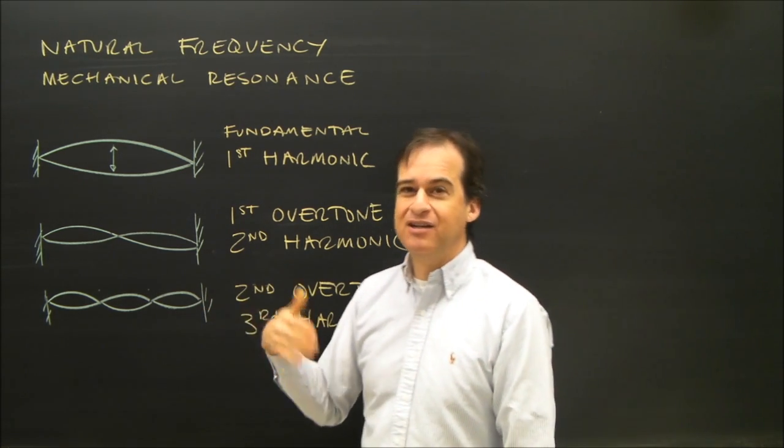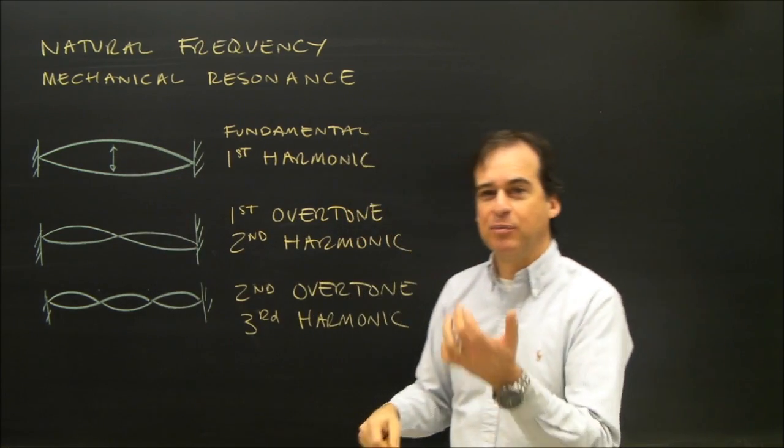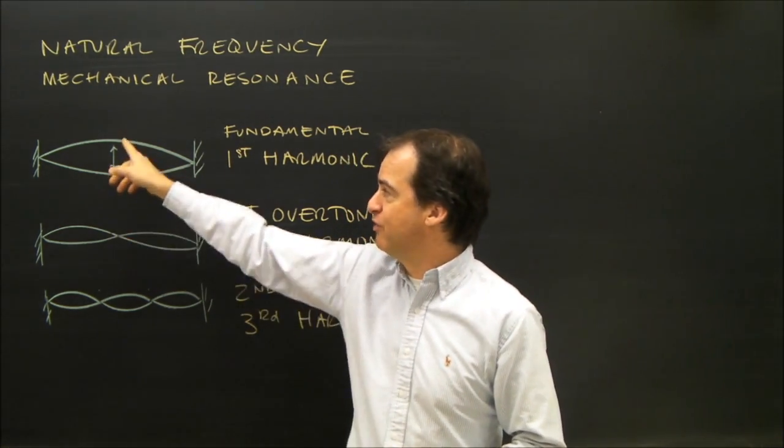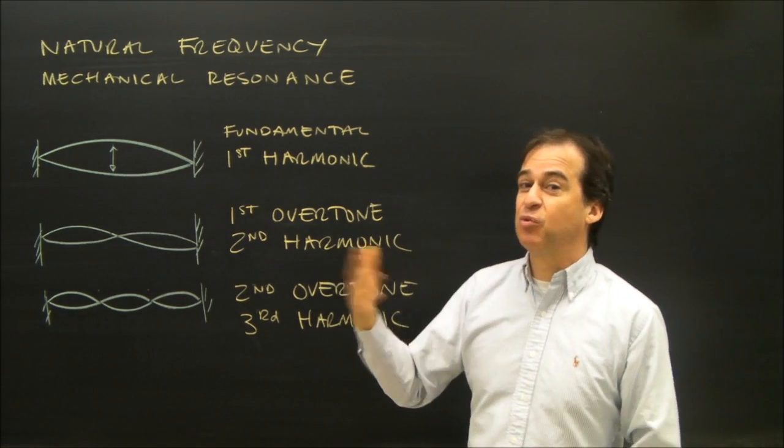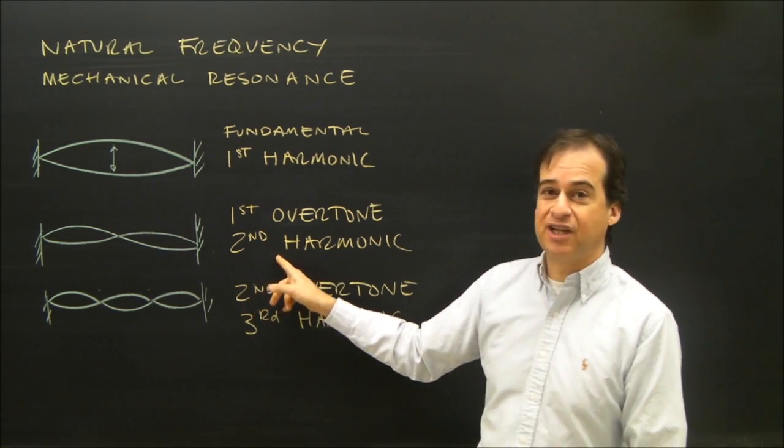Now, I can make another note with that string. This is the string vibrating up and down. If I take a guitar and put my finger somewhere in the middle of that wave and then pluck the string, I hear something that's one octave higher, and what we call that is the first overtone, or the second harmonic.